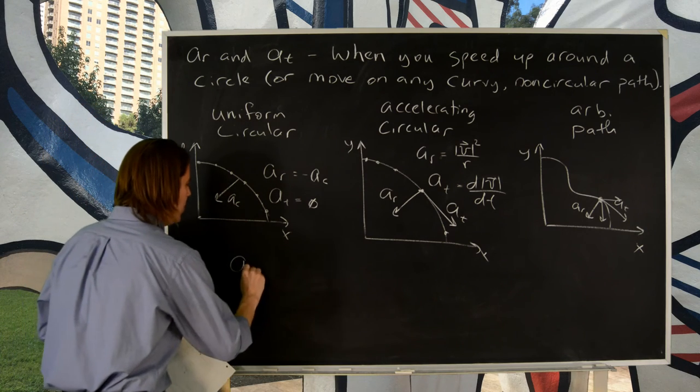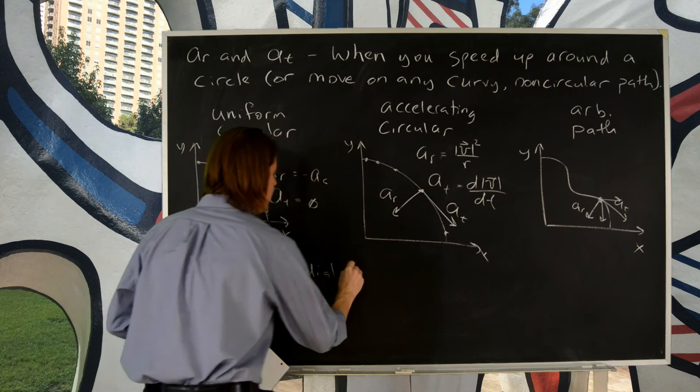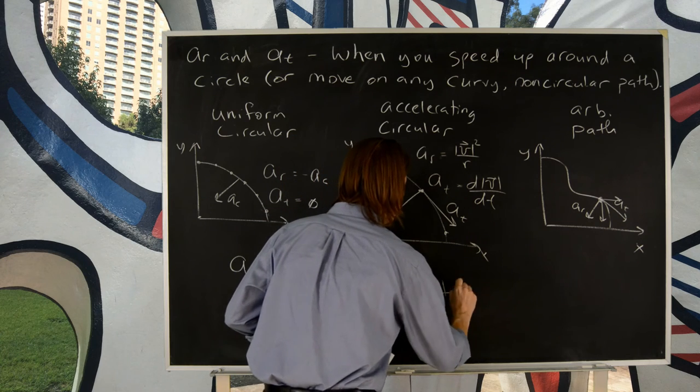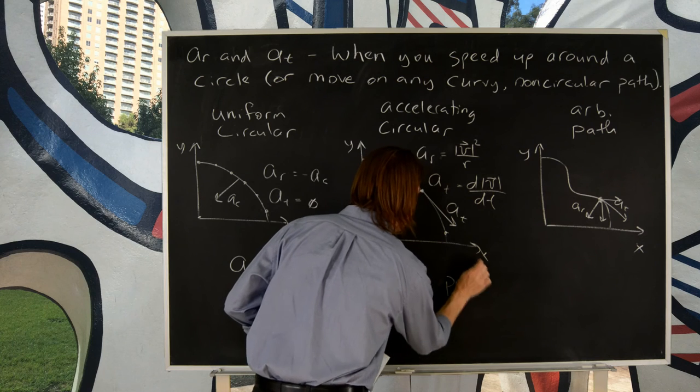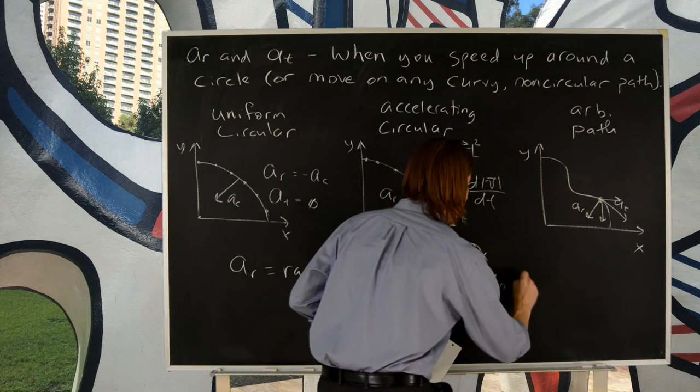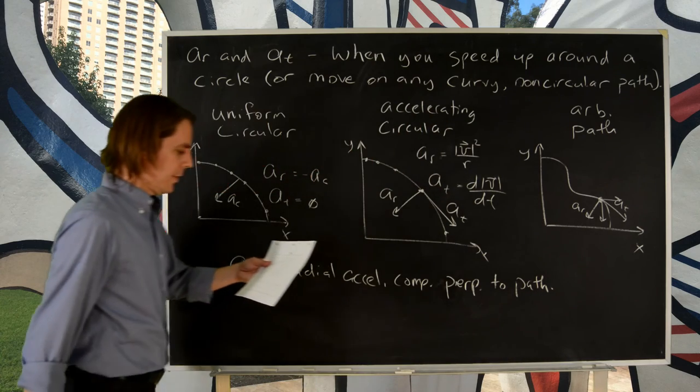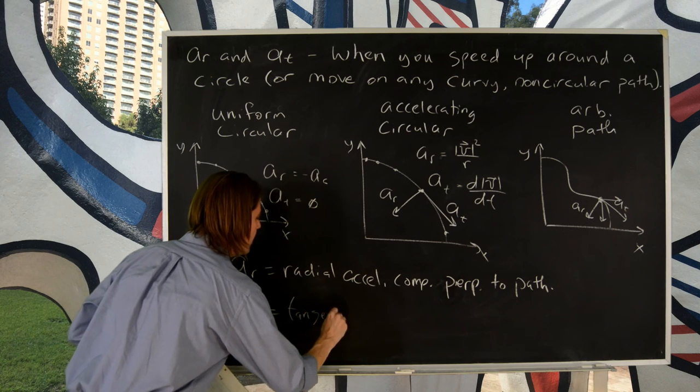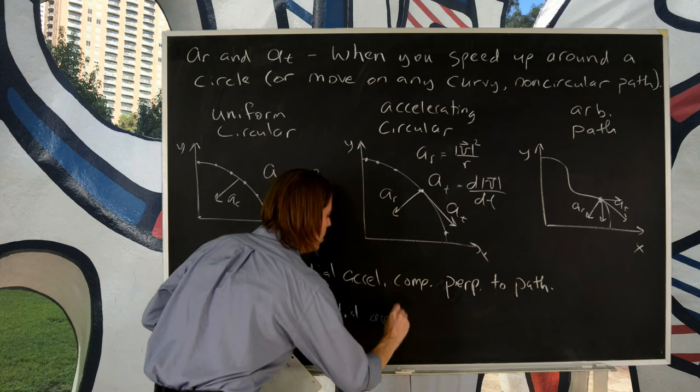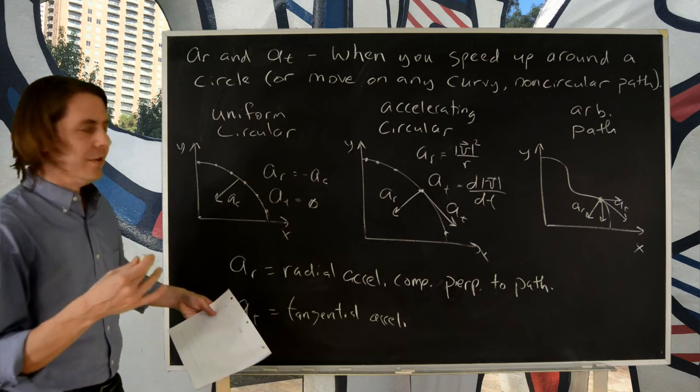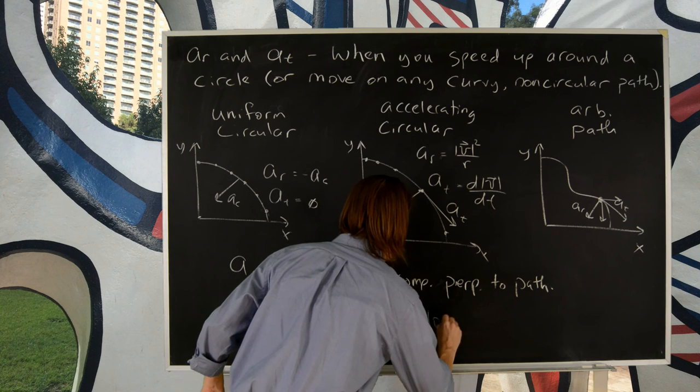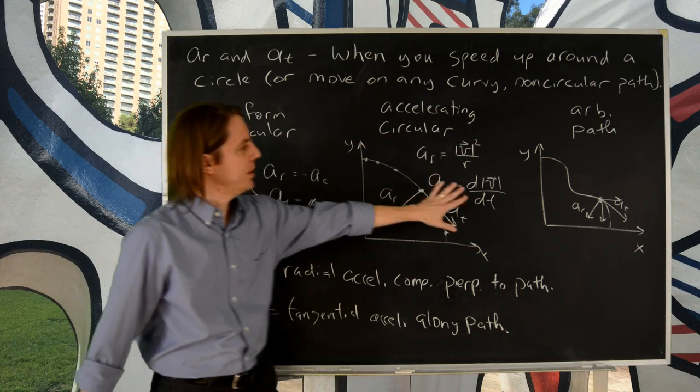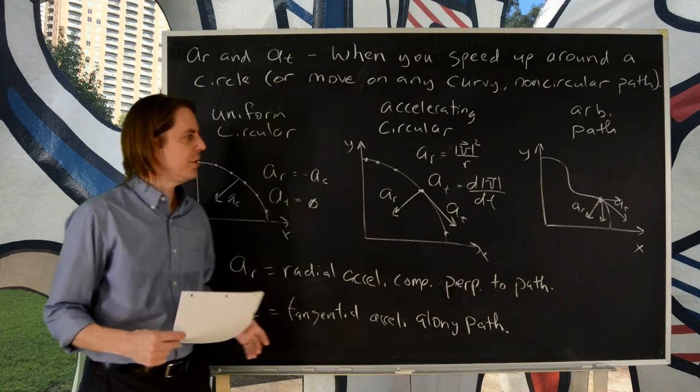But let's just review then. So, AR is radial acceleration. And the main thing I wanted to say is it is the component perpendicular to the path. All right, and tangential AT is tangential acceleration. And the main thing is it is along the path, along the path. How you get them depends on what kind of a problem it is. Maybe you'll be given enough information to get them this way. Maybe you'll do it this way. So, you just have to look at the problem and look at the examples I'm going to show.